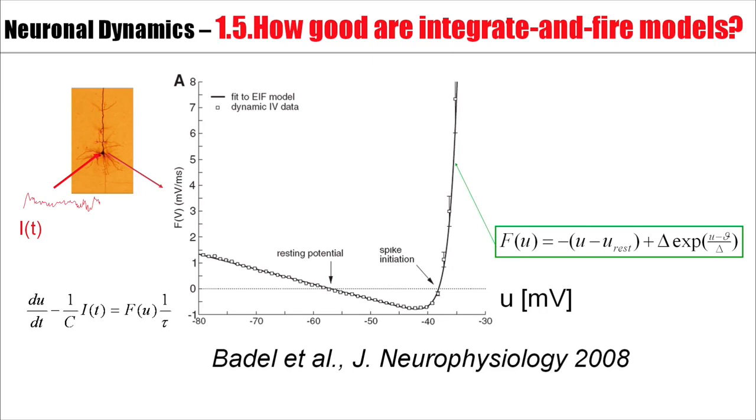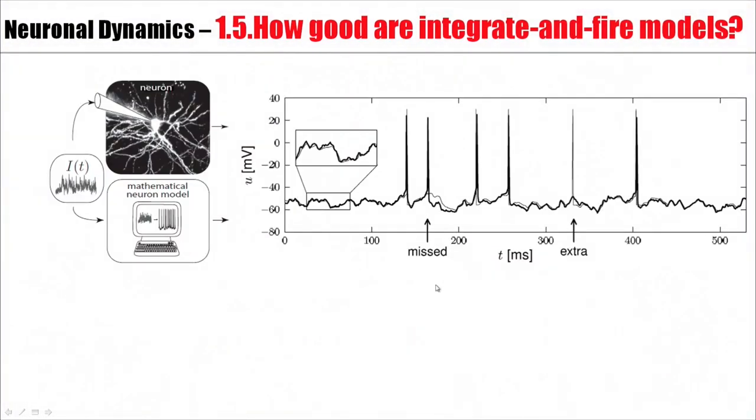And this is what it looks like. What you see is that this function has a linear part, and then it rises quickly. It can be described fairly accurately by a linear term plus an exponential term. In other words, the non-linearity of the exponential integrate-and-fire model seems to be the correct one. From the plot, one can identify the resting potential and the spike initiation point.